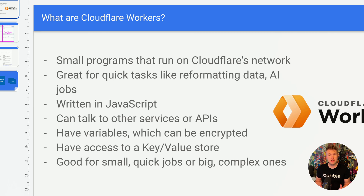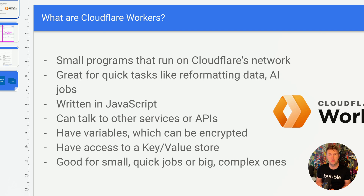You've got access to doing more advanced stuff with custom code — it can talk to other services and APIs. In today's example we're going to use OpenAI's chat endpoints to make our requests, so the worker handles all of that for us. It can also have variables so you can put things like API keys into variables and encrypt them to keep them secure. There's also a key-value store — basically a free data store for storing records at massive scale.